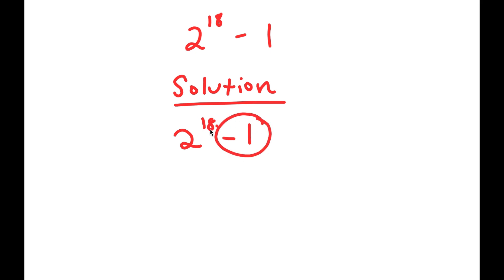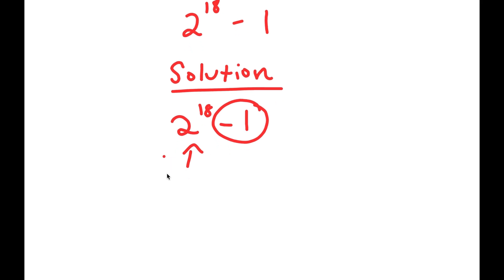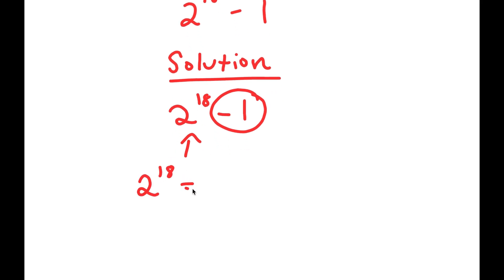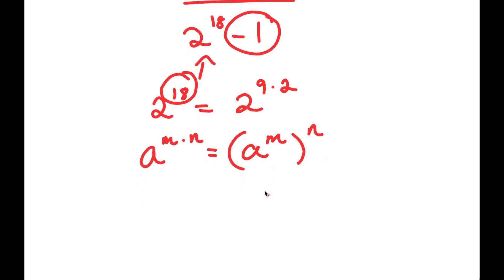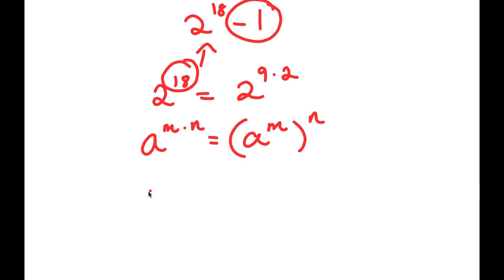Let's first ignore the minus 1 and just focus on 2 to the power of 18. So 2 to the power of 18 is the same thing as 2 to the power of 9 times 2 — I just wrote 18 as 9 times 2. An important property of exponents is that if I have something in the form a to the power of m times n, this is equal to a to the power of m to the power of n. So I can rewrite 2 to the power of 9 times 2 as 2 to the power of 9 to the power of 2.